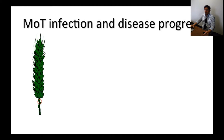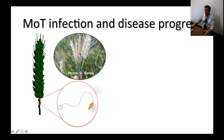Let's discuss infection by the Magnaporthe oryzae triticum pathotype and disease progress. The most visible symptom in the field is head infection. On highly susceptible cultivars, the neck becomes highly susceptible, and from the point of infection upward the whole head can become bleached out. The fungus germinates, produces the appressorium, penetrates, and begins an invasion process that kills tissues. Photosynthetic products can no longer reach the upper parts of the head, which is why these heads become bleached out.